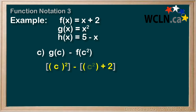And we put c² in the second function, as we're just passing along what we were given. So in place of x, we just put c² in brackets. And we have g(c) - f(c²) = c², the g part, minus the f part, c² + 2.